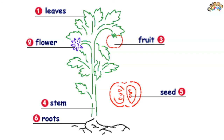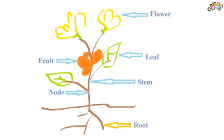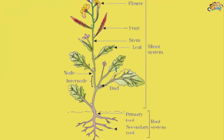In gymnosperms and dicotyledons — plants with two seed leaves — the radicle becomes a taproot. It grows downward, and secondary roots grow laterally from it to form a taproot system. In some plants, such as carrots and turnips, the taproot also serves as food storage.